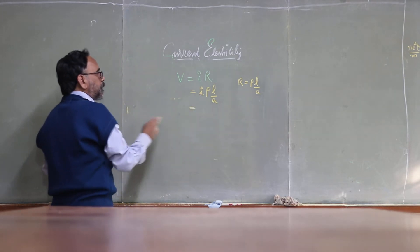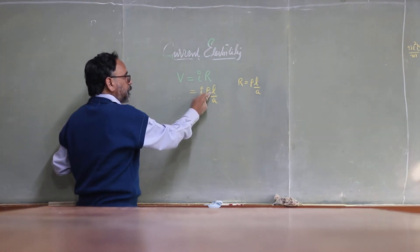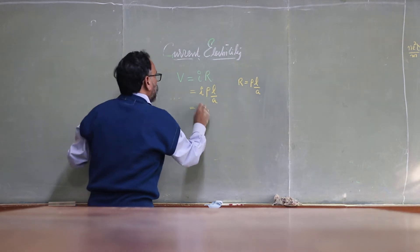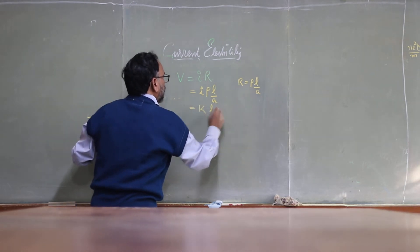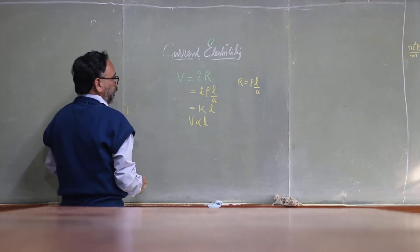because we are passing constant current through the wire, therefore this is constant. ρ is constant for that particular material. A, uniform area of cross section, therefore this is also constant. So V equals K L, or V is directly proportional to L.